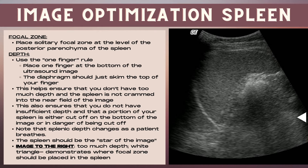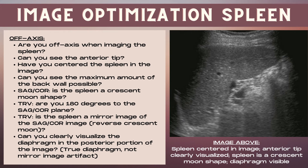Note that splenic depth changes sometimes dramatically as a patient breathes in and out. In the image to the right, there's too much depth — too much empty space at the bottom that could be filled with information about the spleen if depth were better optimized. Another important optimization factor is ensuring the spleen is not off-axis within the ultrasound image.